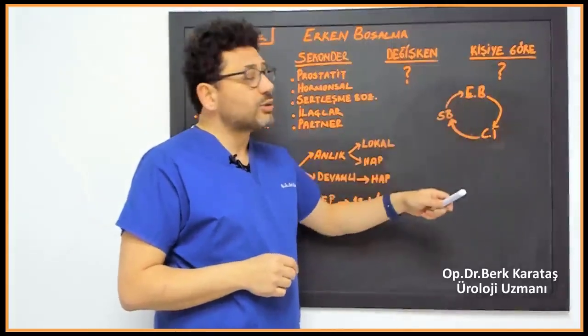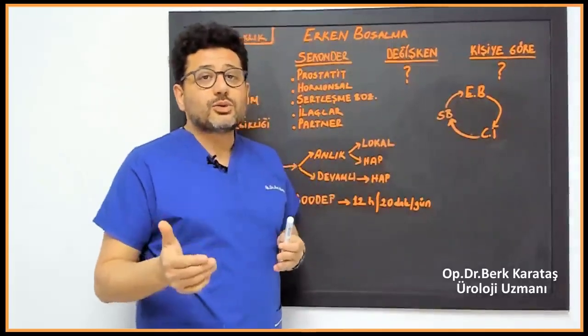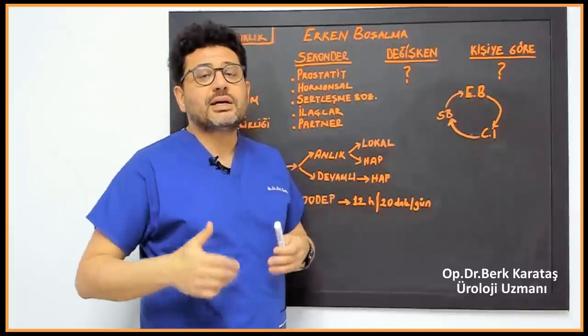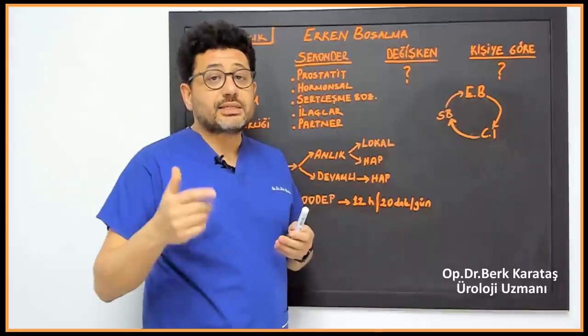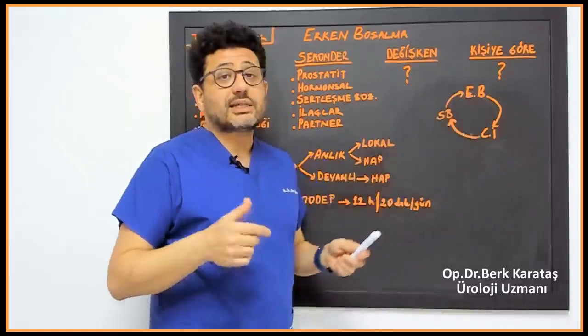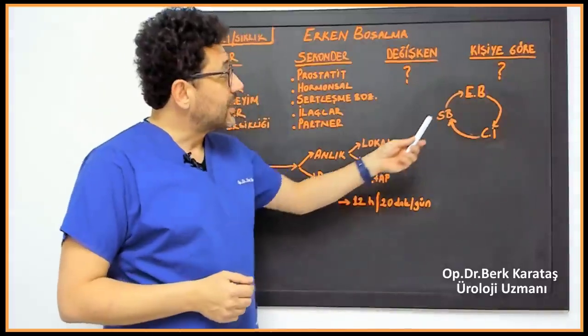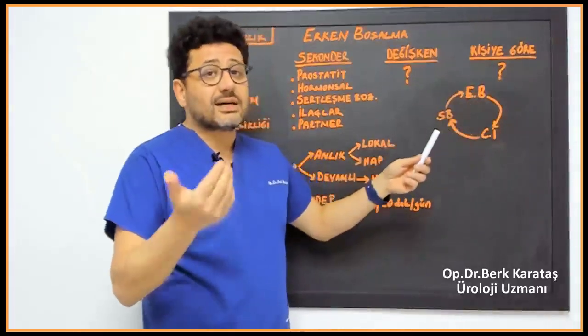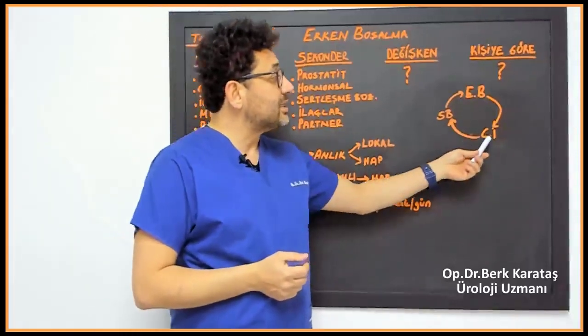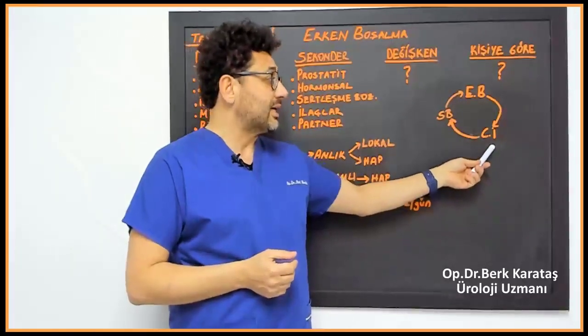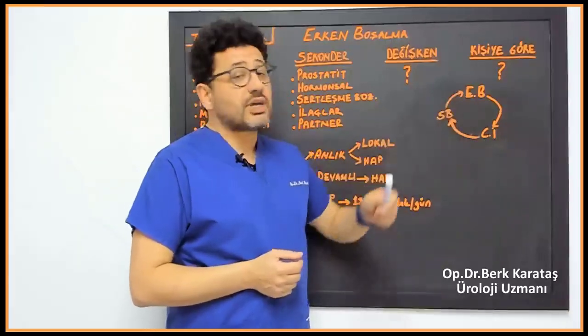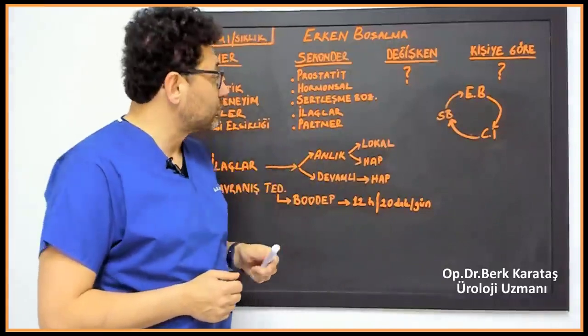For example, if a person has premature ejaculation, human beings do not want to do the action that they cannot or cannot do again, or they do it very quickly. Therefore, people who ejaculate prematurely will ejaculate even earlier after a while. Sexual reluctance will occur because the person who ejaculates prematurely cannot get enough pleasure and cannot satisfy the other party enough. Sexual reluctance will cause erectile dysfunction after a while, and erectile dysfunction will cause premature ejaculation more quickly after a while.